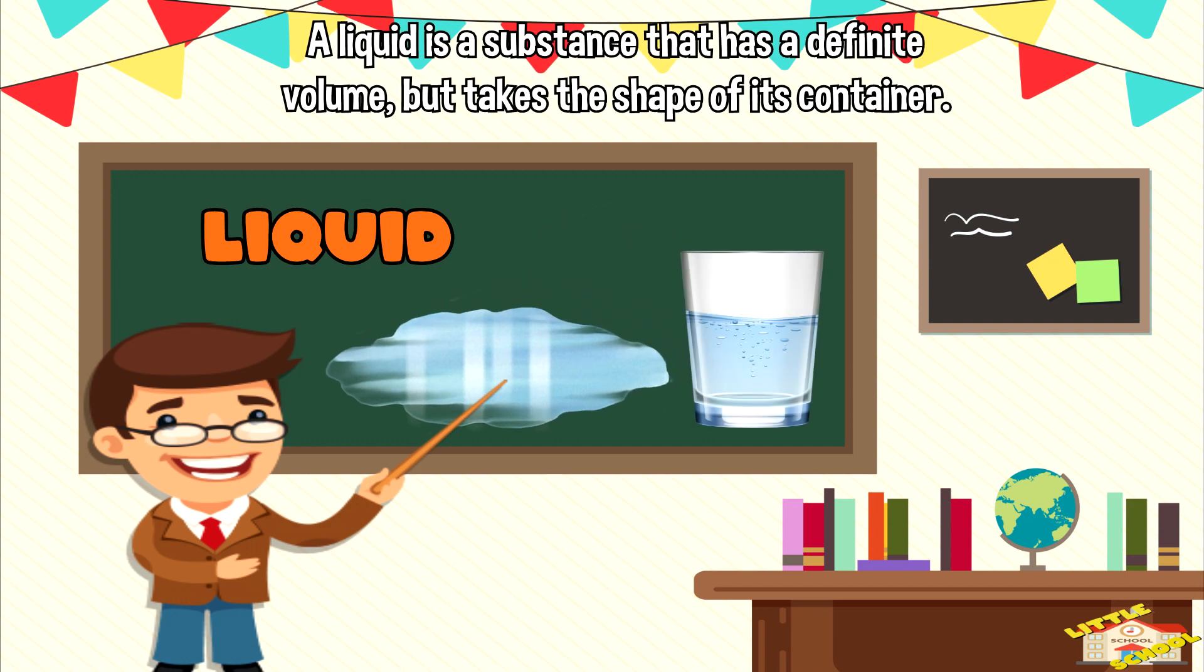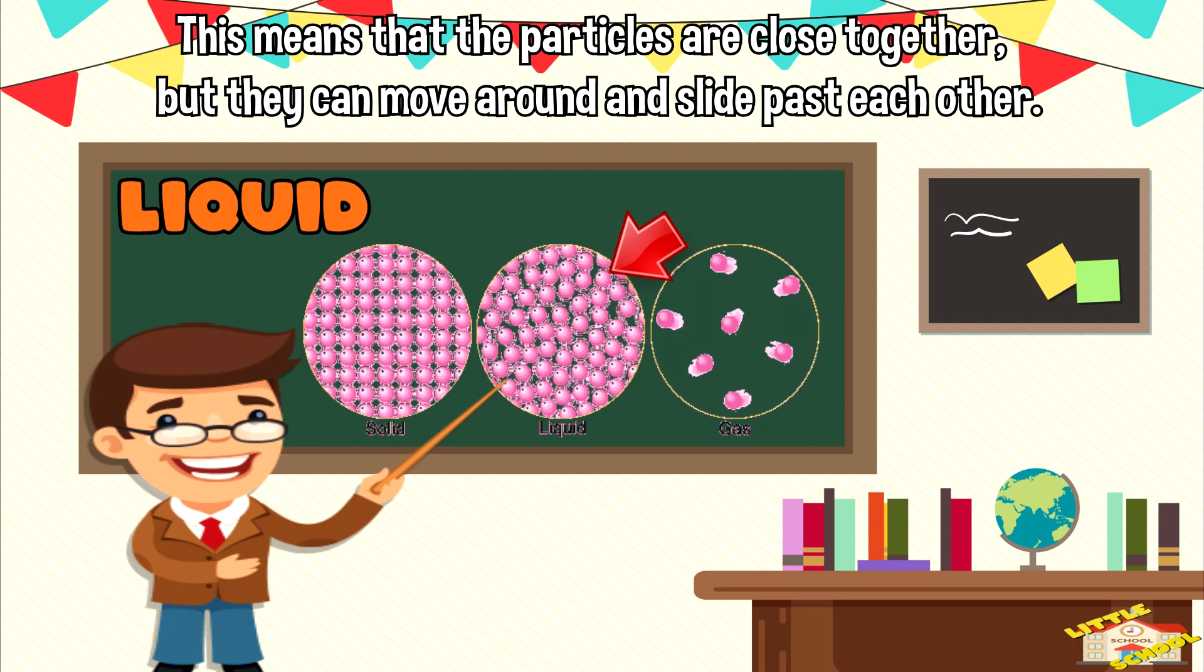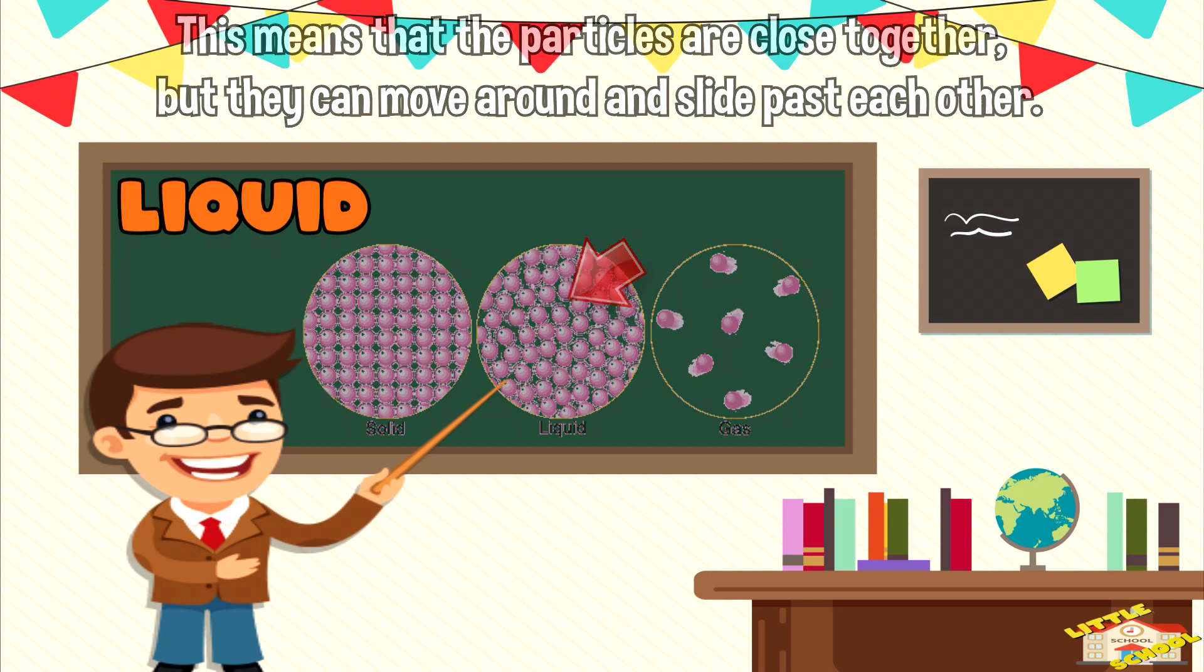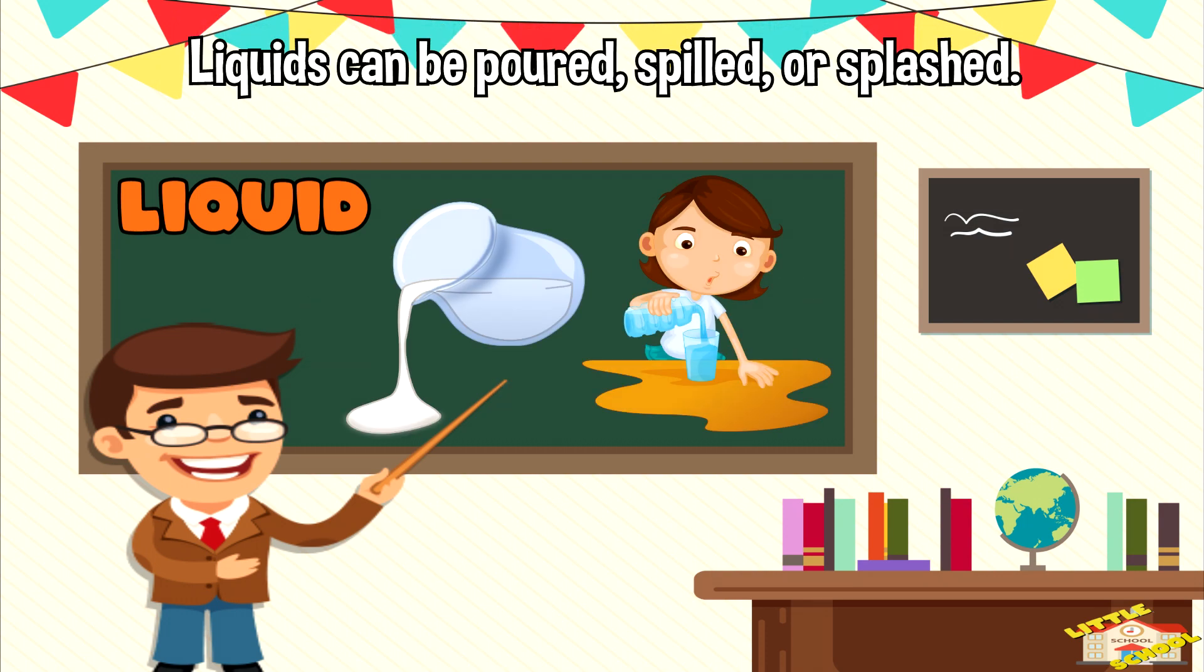A liquid is a substance that has a definite volume but takes the shape of its container. This means that the particles are close together but they can move around and slide past each other. Liquids can be poured, spilled, or splashed.